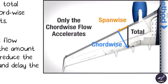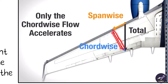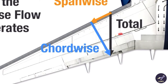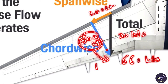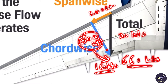Only the chordwise flow accelerates; the spanwise flow stacks up and does not accelerate. For example, if total flow is 700 knots, spanwise is 200 and chordwise is 500. If the shock wave forms at 660 knots, you still have a margin of 160 knots — you can fly faster before the shock wave forms.